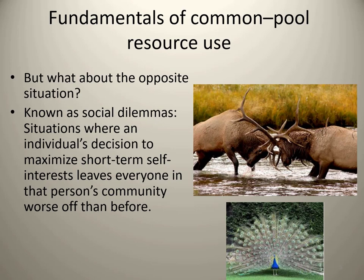Another example of a social dilemma: aggressive driving. People are late for work, so they're speeding, tailgating, cutting other people off. This might benefit the individual — they get to work on time — but it's negative for the whole group. The people getting cut off may get into an accident. The individual's action benefits themselves while leaving everyone else worse off.